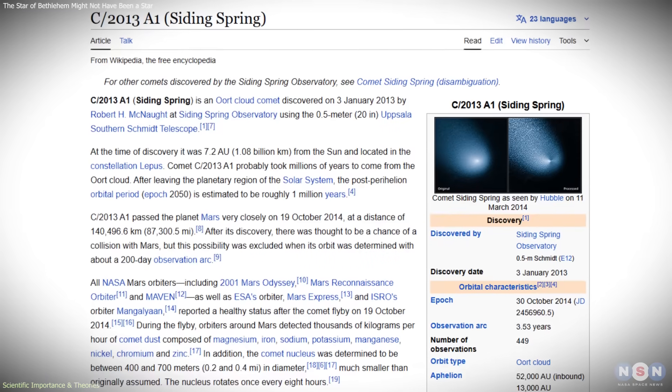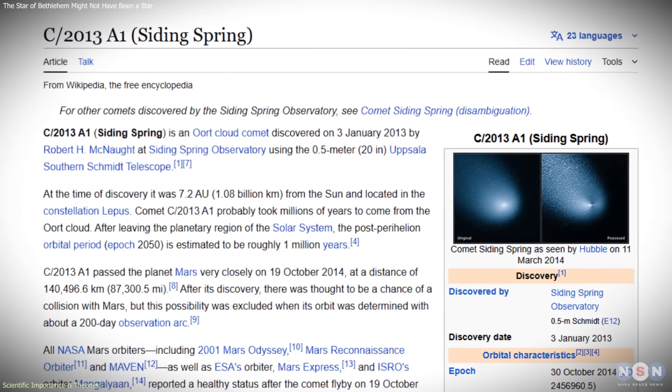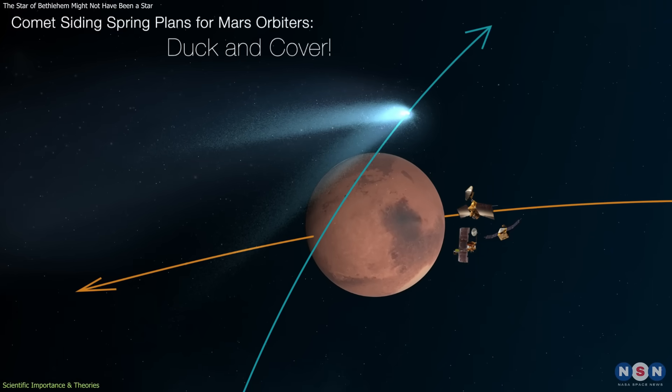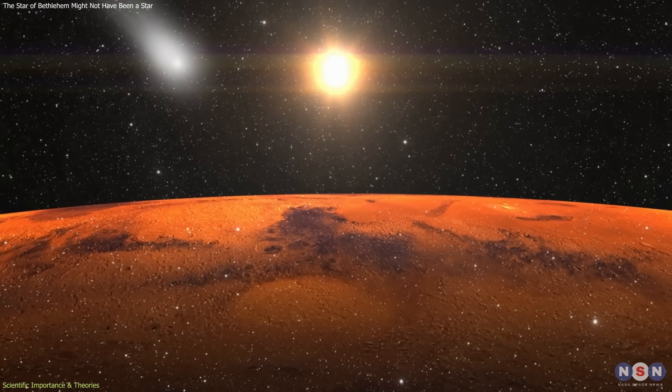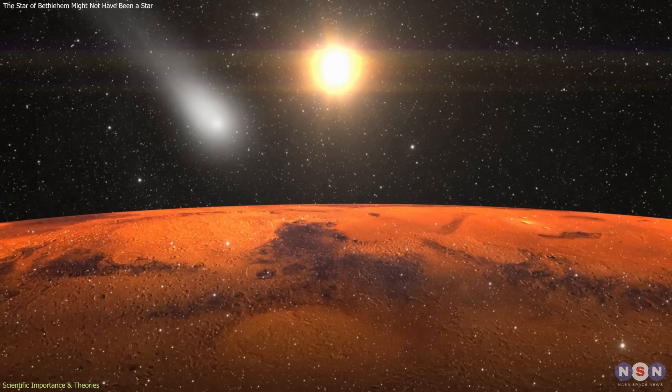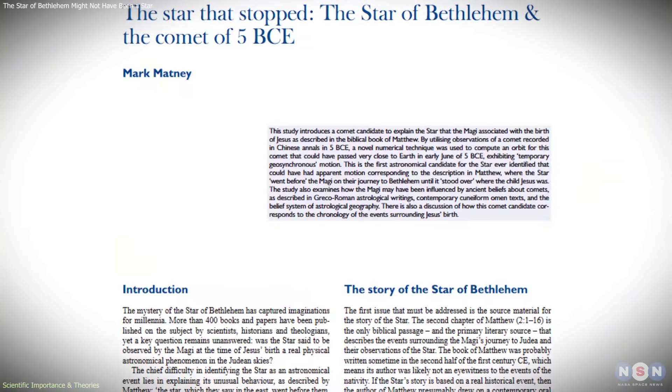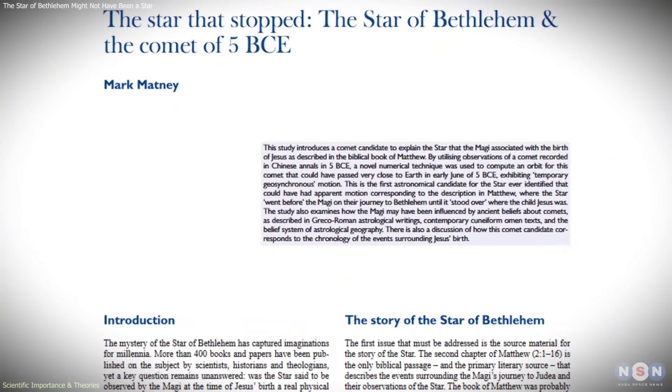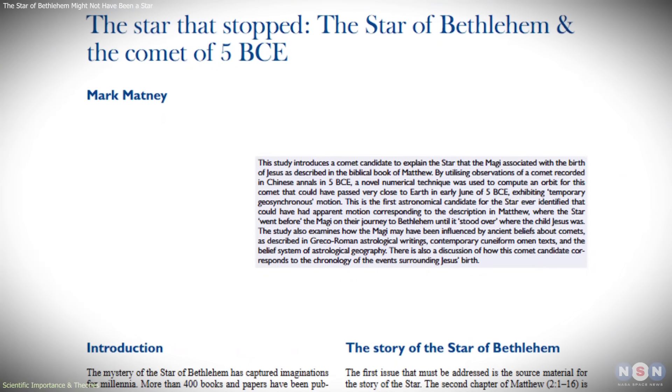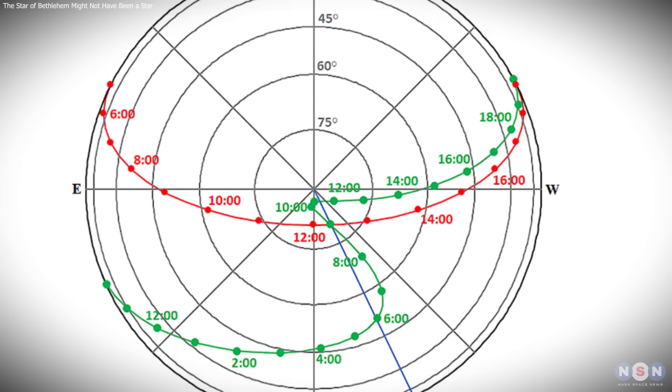Every comet has a unique orbit, and rare close encounters are known to occur. A modern example supports this point. In 2014, Comet Siding Spring passed remarkably close to Mars, demonstrating that near-planet comet flybys are real events, not theoretical curiosities. What gives this hypothesis scientific value is its restraint. It does not claim certainty. It simply shows that the described behavior is not physically forbidden.